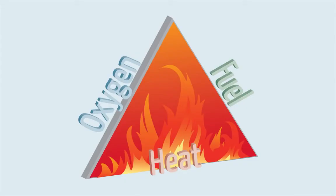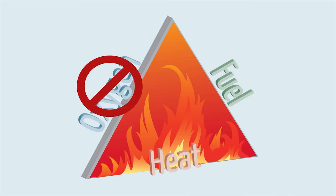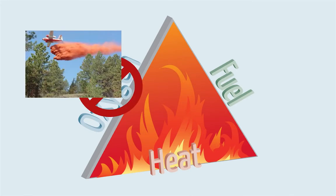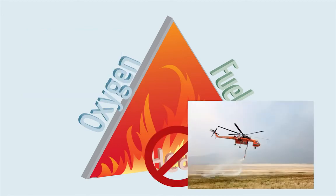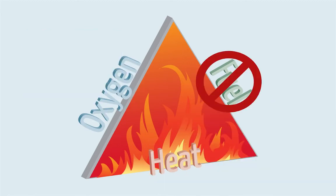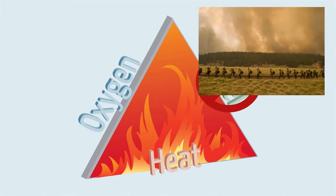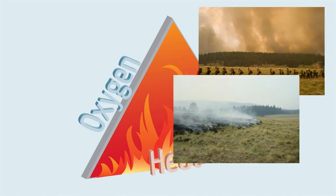Firefighters can use the fire triangle to help extinguish fires. They can remove oxygen by smothering the fire with flame retardant, such as slurry dropped from planes. They can remove heat by cooling the fire with water. And they can remove fuel by digging a fire line or starting a backfire to starve the fire of fuel.